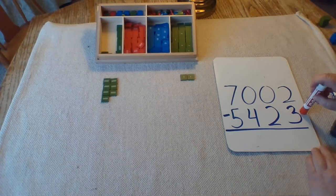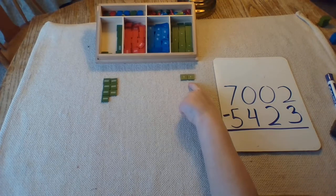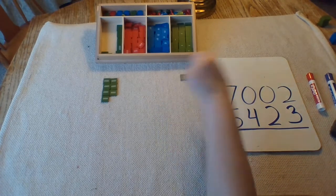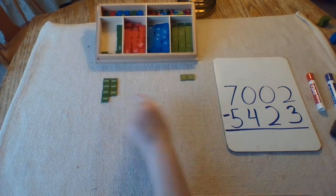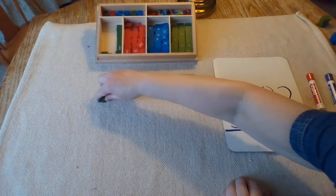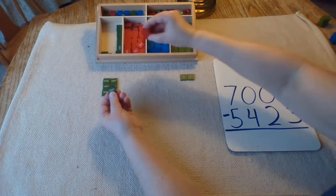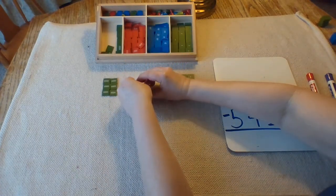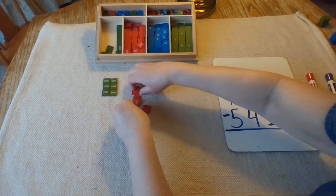We're going to take away the subtrahend. It says 3. There aren't 3 there to take away, so we need to get some more units. Let's go see if we can trade with the tens — knock, knock, nobody home. How about hundreds? Nobody there either. Let's try the thousands. Yes, this thousand is going to trade itself in for ten hundreds. One thousand is the same as ten hundreds.